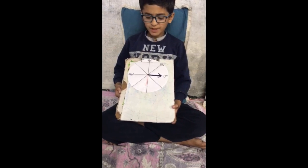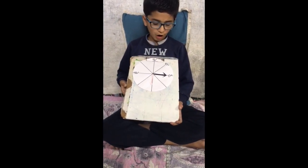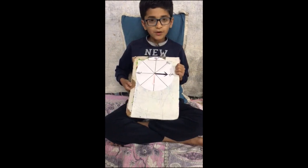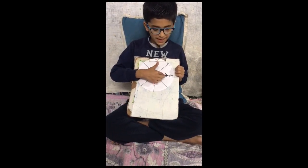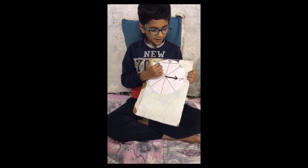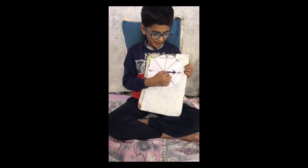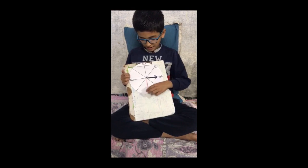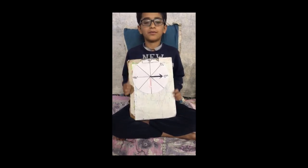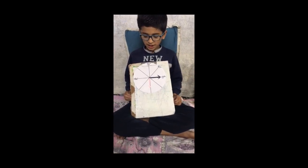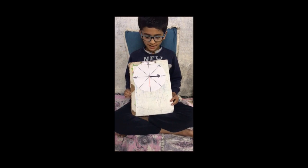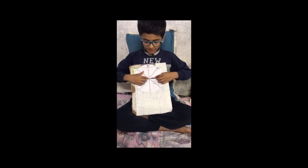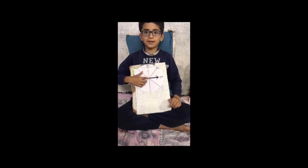Now I will tell you how to make an arrow. First, we make a drawing of an arrow with pencil, color it with a black sketch pen, and erase the pencil. Then we cut a thick paper into small pieces and draw an arrow on it as shown.